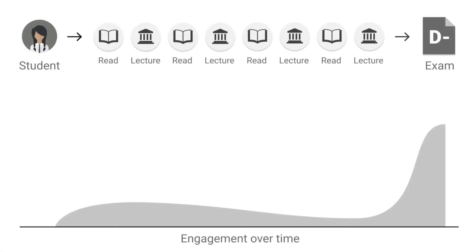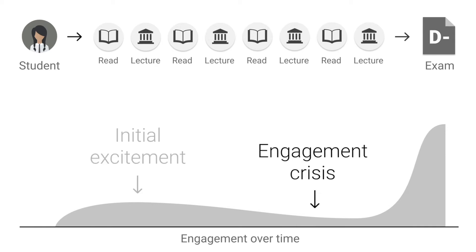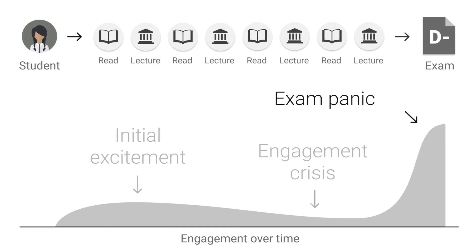This graph represents the student engagement in a traditional course setup. Students show some initial excitement at the beginning, but soon start to lag behind due to the passive learning activities. At the end of the course, students panic as they still have to get a lot of work done and are under a lot of pressure to prepare for the exam. This is not beneficial for their learning process.